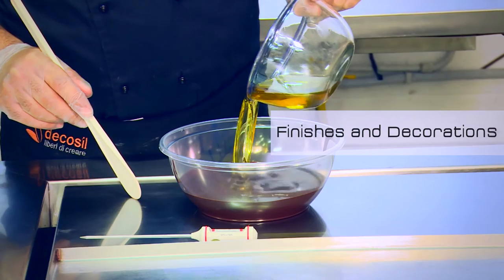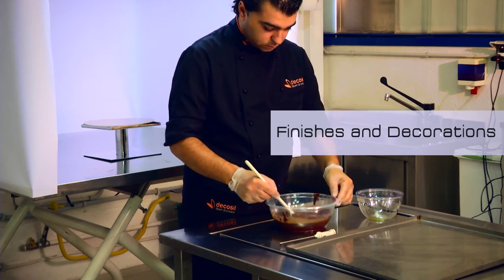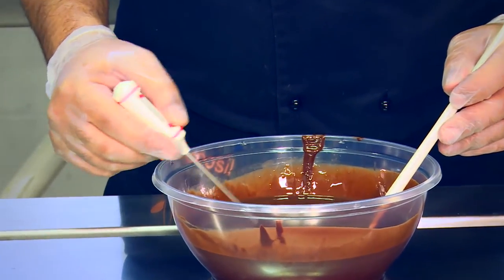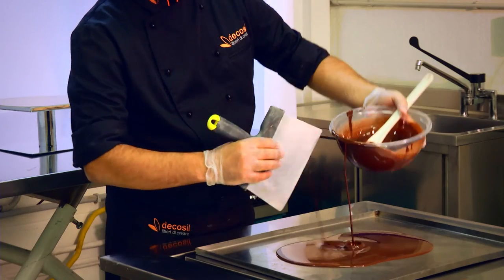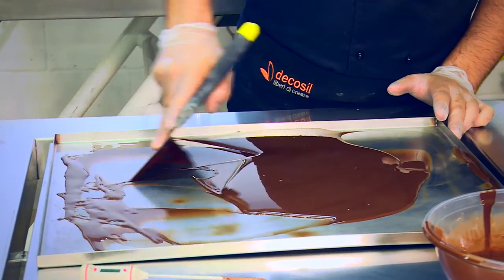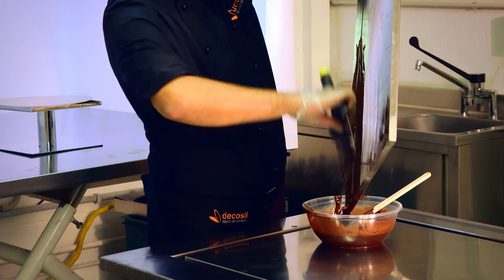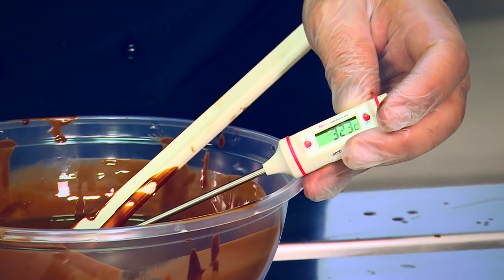Mix two parts of dark chocolate and a part of cocoa butter. Heat it to 32 Celsius degrees.